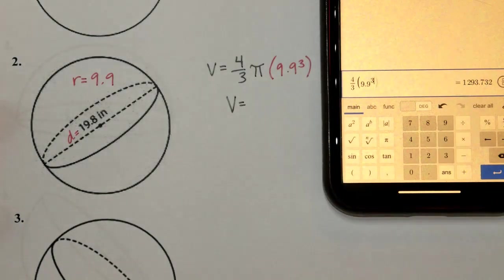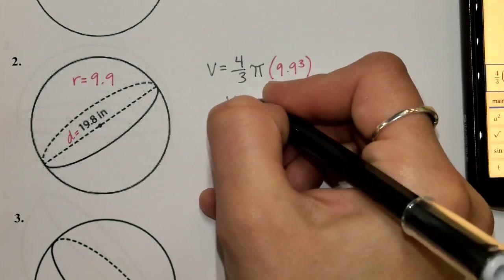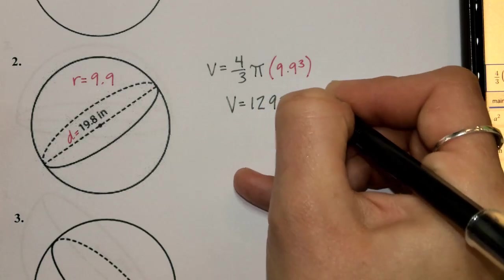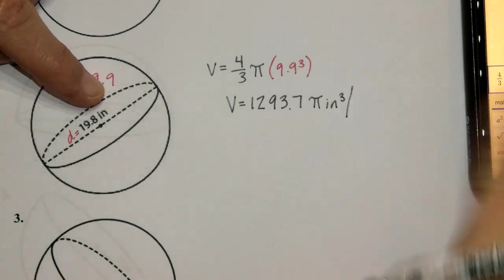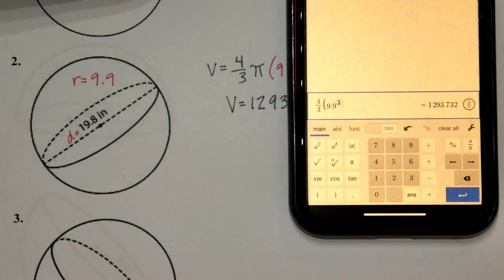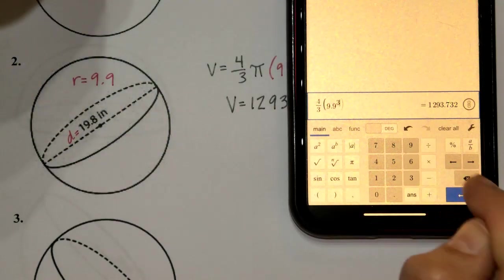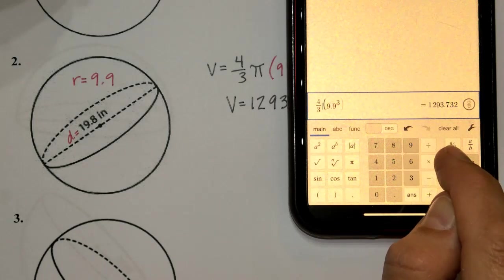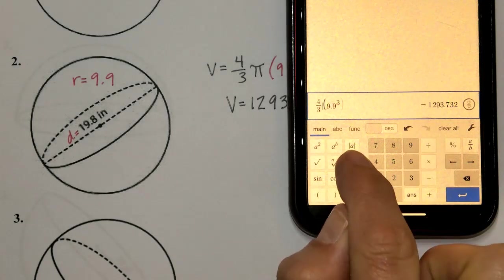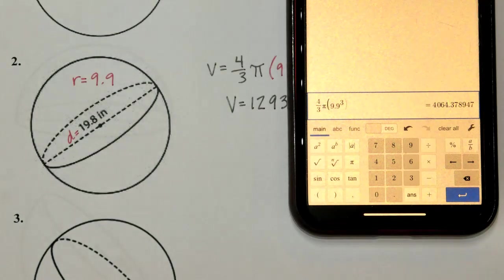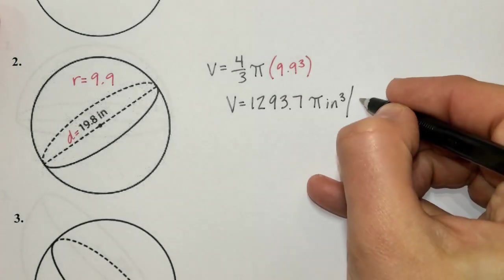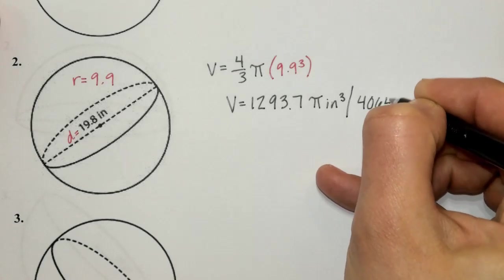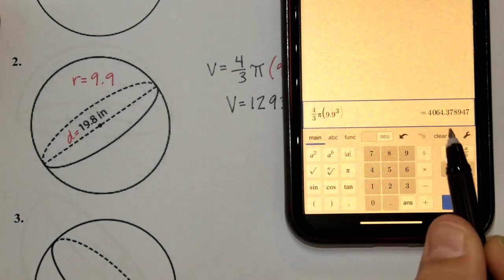The answer appears right away — you don't even have to press enter. In terms of pi, the volume is 1,293.7π inches cubed. To get the full decimal answer on Desmos, you can scroll with the left arrow and insert the pi symbol before pressing enter. Rounded to the nearest tenth, we get 4,064.4 inches cubed.